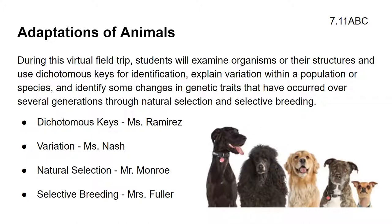Isn't that a fine-looking bunch of animals, especially the one right in the middle? Ms. Ramirez is going to talk to you about dichotomous keys. Ms. Nash will talk about variation. Mr. Monroe will explain natural selection. And Ms. Fuller will talk about selective breeding. You cannot verbally ask us questions, but you can go to www.tiny.cc/EEC-questions-answer and ask us questions and we'll do our best to answer them during the program. If not, we'll send the answers to your teacher.